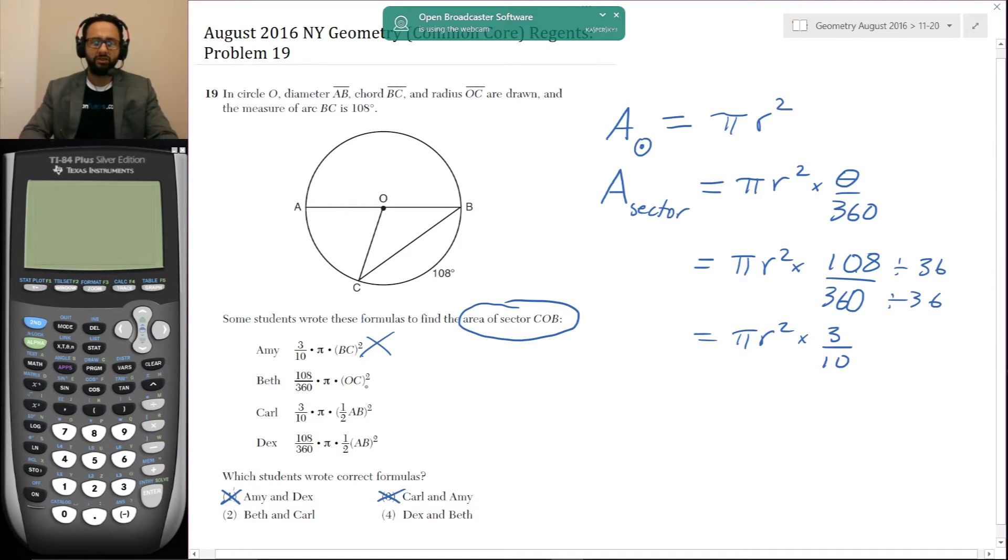So how about Beth? She has the 108 over 360 times pi. Then she has OC squared. Is that r squared? Let's see, OC is a radius. So yes. So Beth is actually correct. But Beth is in choice three and four.